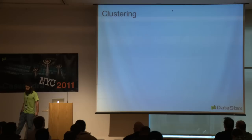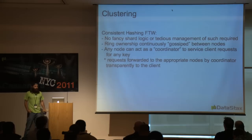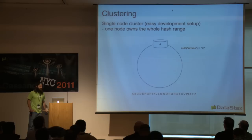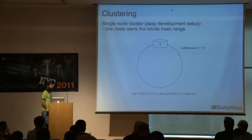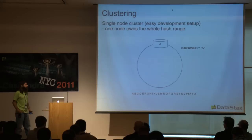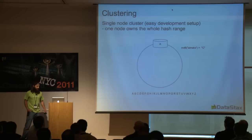Let's talk about clustering and Cassandra's clustering model — how data is distributed around the cluster. Consistent hashing: no fancy shard logic, no tedious management of records. Ring ownership and ranges are continuously gossiped around the ring automatically. Any node can act as a coordinator to service requests for any key — requests are forwarded to the appropriate nodes transparently. In a single-node cluster, one node owns the whole hash space. We'll simplify and pretend the hash space is the alphabet, where the hash of 'zz8' equals 'c', mapped to that single node.